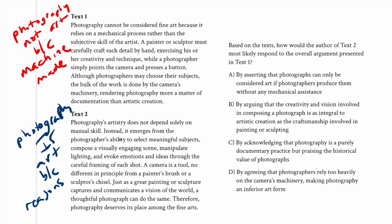When we get to the answer choices we can begin filtering in terms of overall agreement or disagreement. Given that there is overall disagreement here, answer choices that signal agreement can be quickly eliminated. Answer choice A says 'by asserting that photographs can only be considered art if photographers produce them without any mechanical assistance' — no, it doesn't say that at all. It says artistry doesn't depend on manual skill, and that mechanical assistance is something other art forms also involve — painting requires a brush, sculpting a chisel.